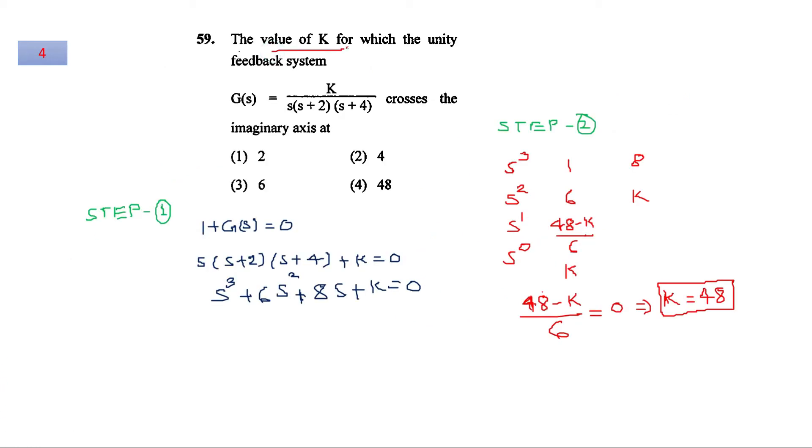For question number 4, the value of k for which the unity feedback system crosses the imaginary axis: This question is from root locus. As step number 1, we will write its characteristic equation: 1 plus GS HS equals 0. This is our characteristic equation of the system and it will be of third order. Now making Routh array starting from s cube up to s zero. For the system, for this root locus to cross the imaginary axis, we will equate the s to the power 1 row to zero to find the value of gain k, and that value will be 48. So for question number 4, option 4 is correct.